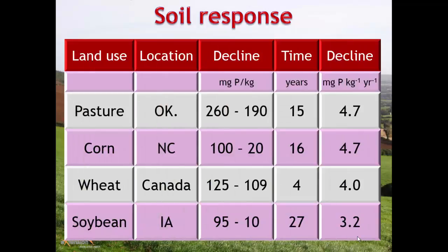Looking at the literature — Cox's work from North Carolina, Canadian studies, and others — over 15 to 40 years you see an average decrease of around 4 to 5 milligrams of phosphorus per kilogram of soil per year with offtake. That's a rough ballpark across different management systems. If you've built up soil levels to 260 or 125 mg/kg above an optimum of around 50, it will take a considerable time to decline, and during that period elevated phosphorus may still be released to runoff.